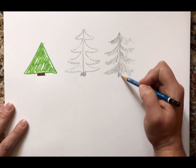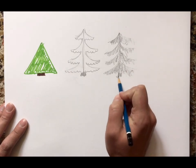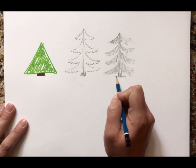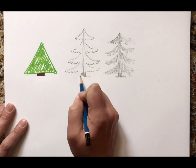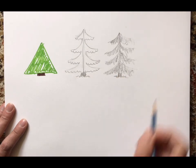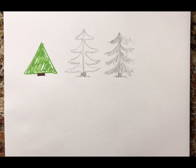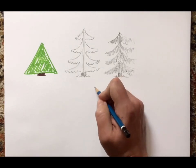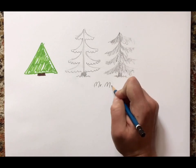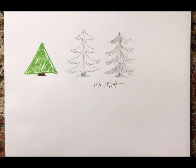All right, knocking in my trunk. If I want, I could put a little hint of the ground line there. So there's three different ways to draw an evergreen tree. Oh, I gotta write my name right. Mr. Matt. All right, that's it. Thank you for drawing with me today. I'd love to see pictures of your trees, so you can just email them to me. My email will be somewhere probably with this video. All right, have a great day.